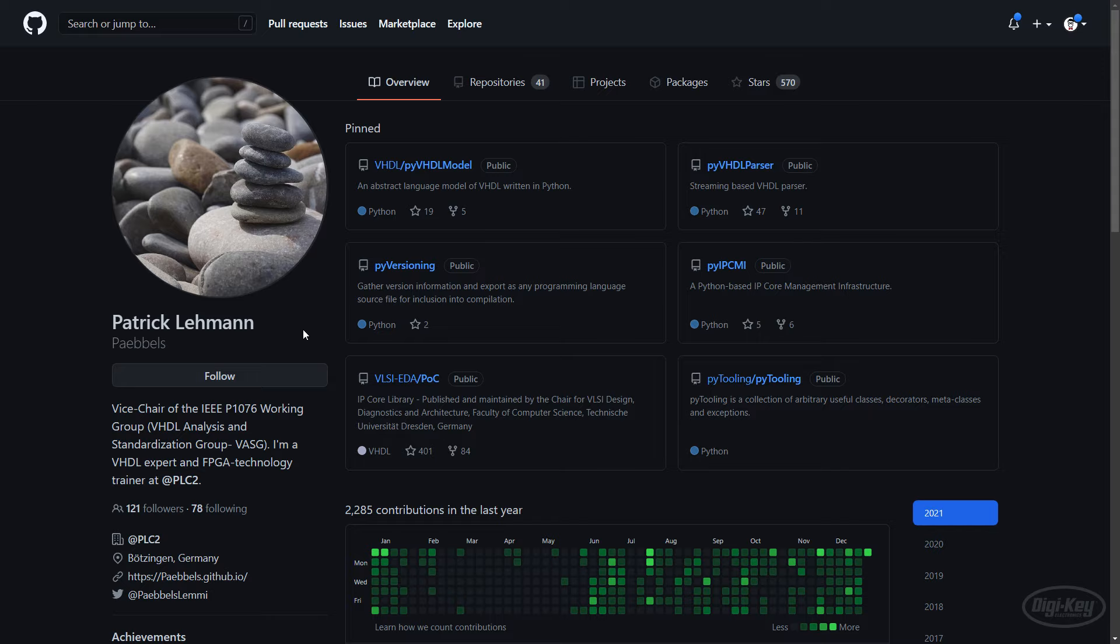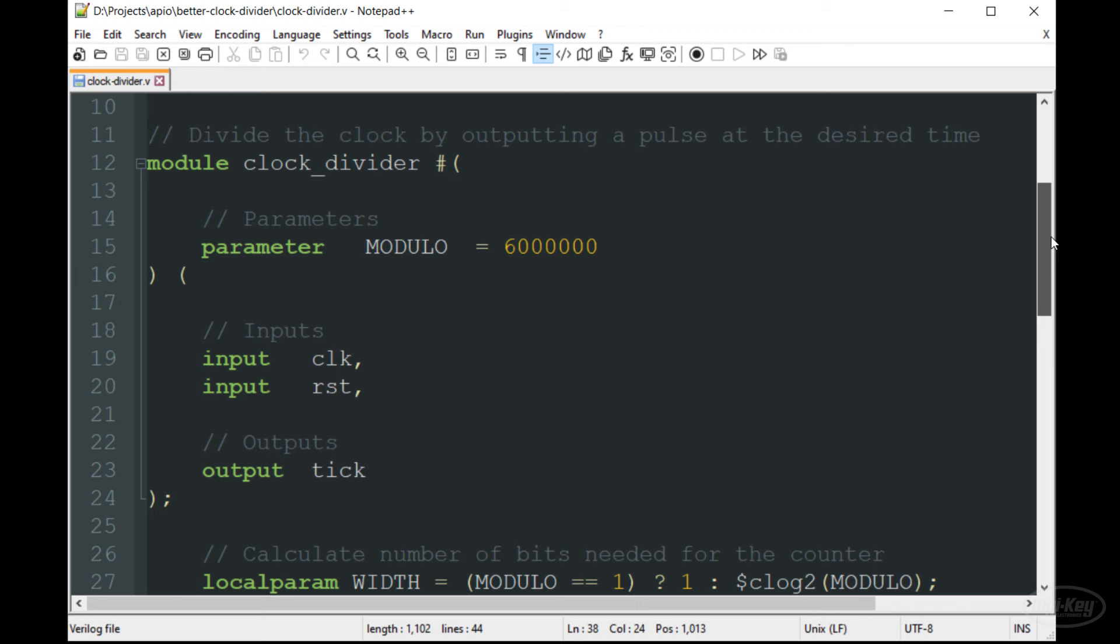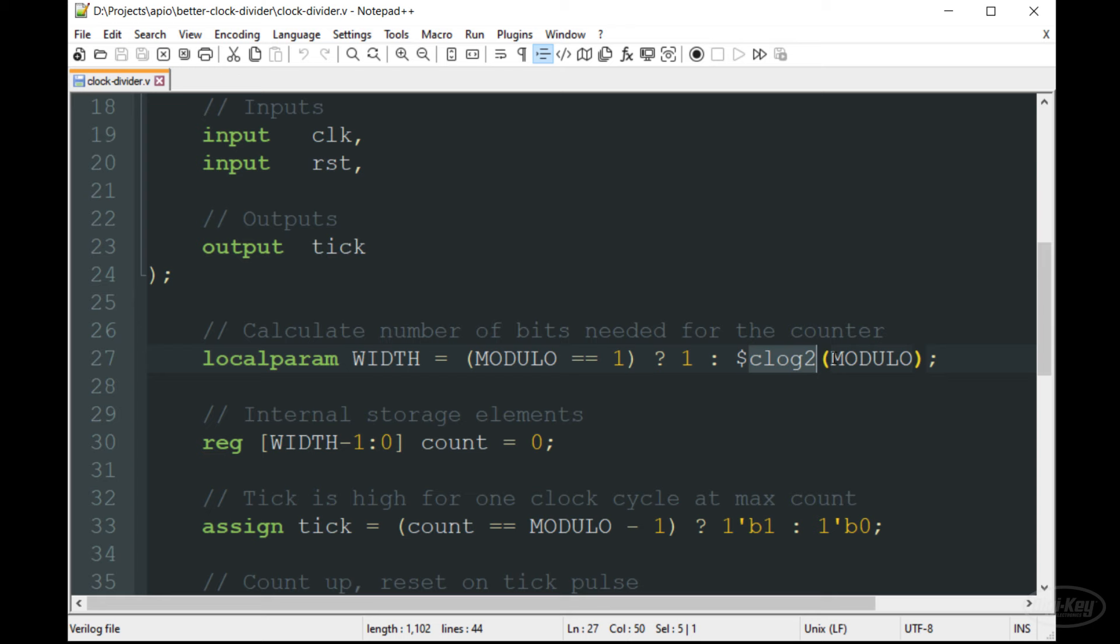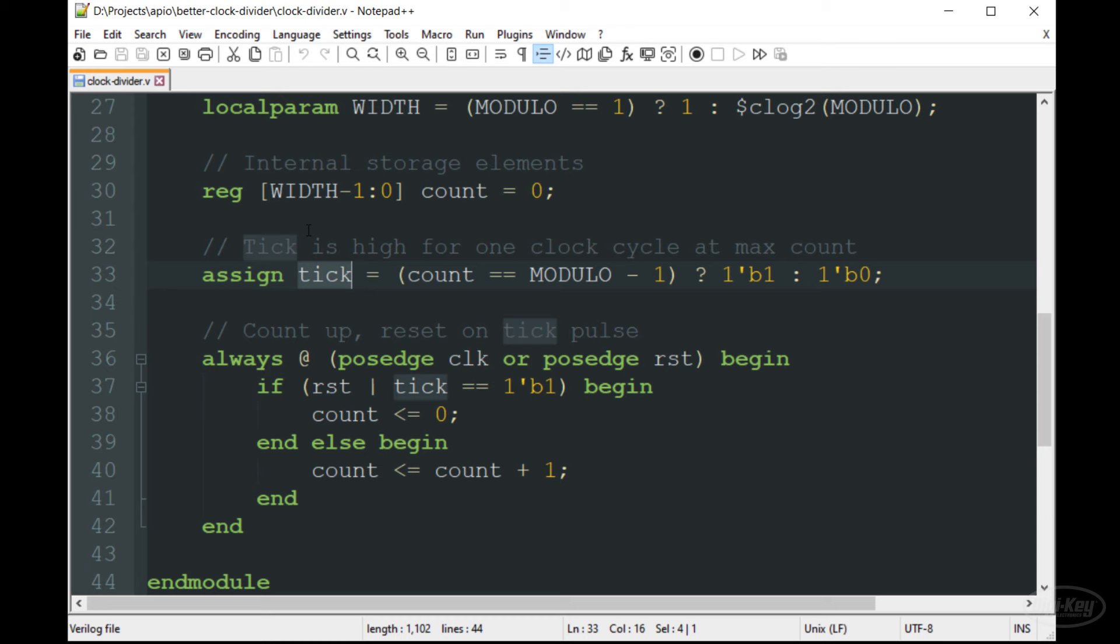I want to thank Patrick Lehman for showing me a much better way to create a clock divider. Here is that better clock divider. We give a max clock count as a parameter much like we did before. However, note that instead of a divided clock output, we now have this tick output. We use this built-in log base 2 ceiling function to figure out how many bits our counter needs to be. The key here is that rather than producing a divided clock, the tick signal goes high for one clock cycle at the end of the count, and then the counter starts over again. The always block continuously increments the counter and resets the counter whenever tick is high, which happens when the counter reaches the modulo parameter value.